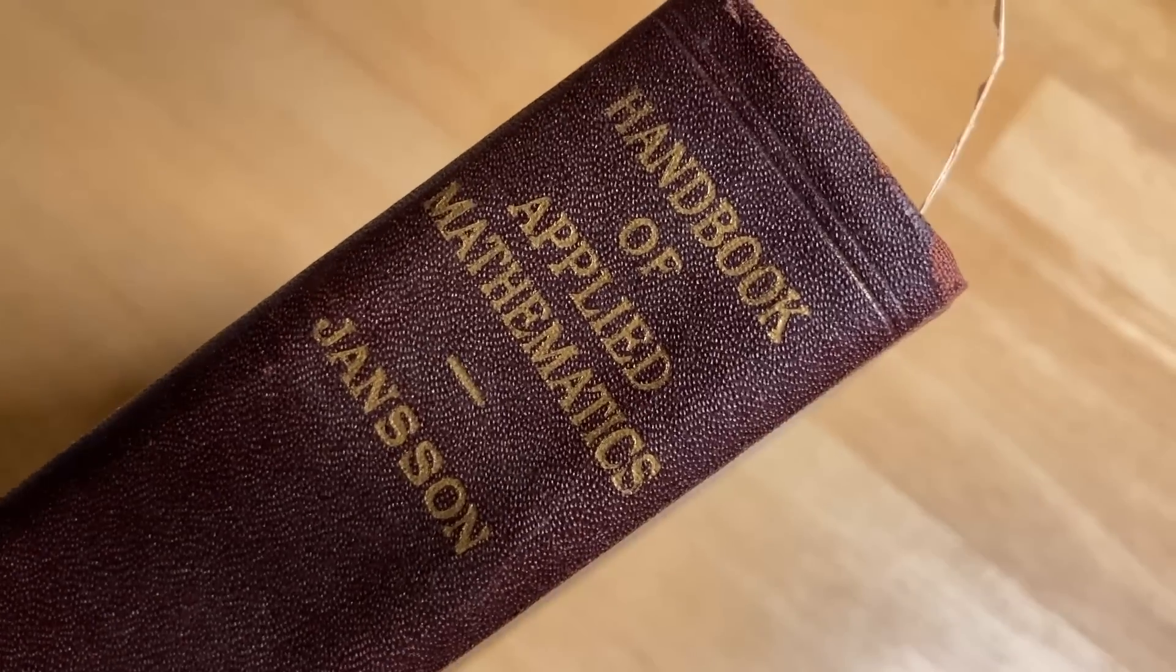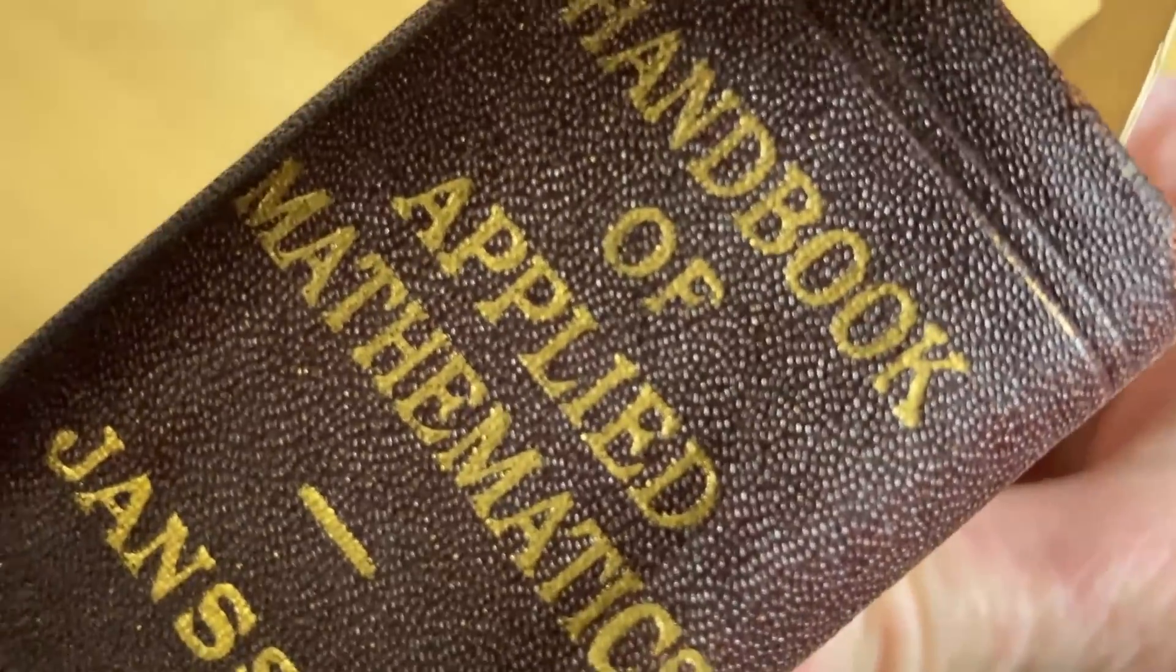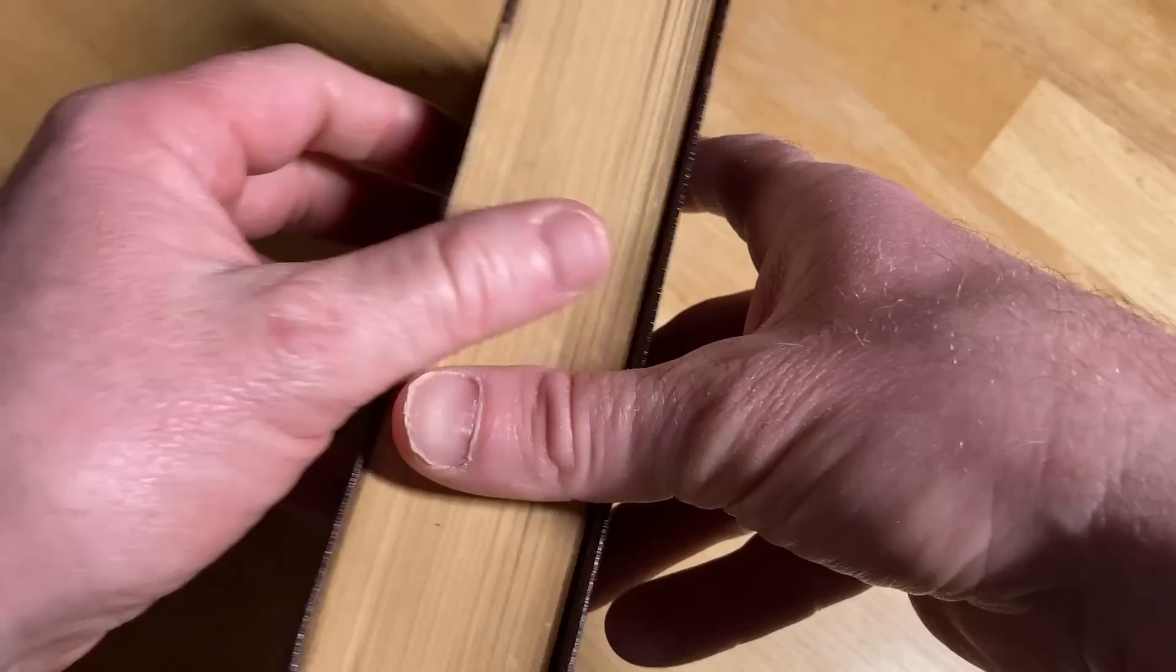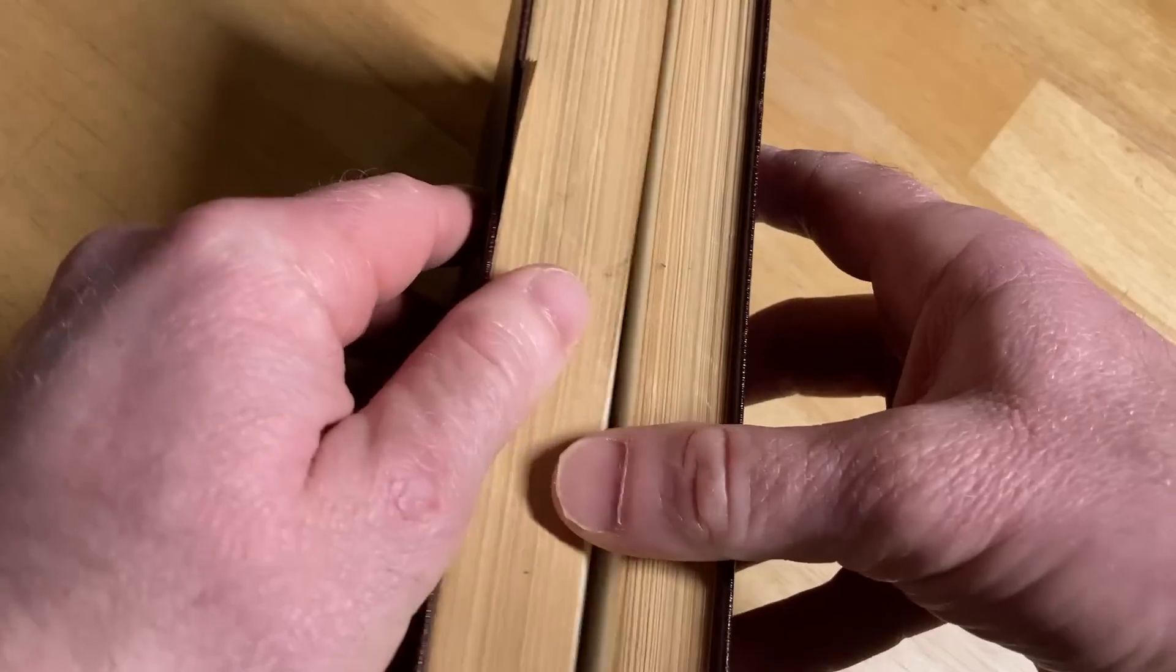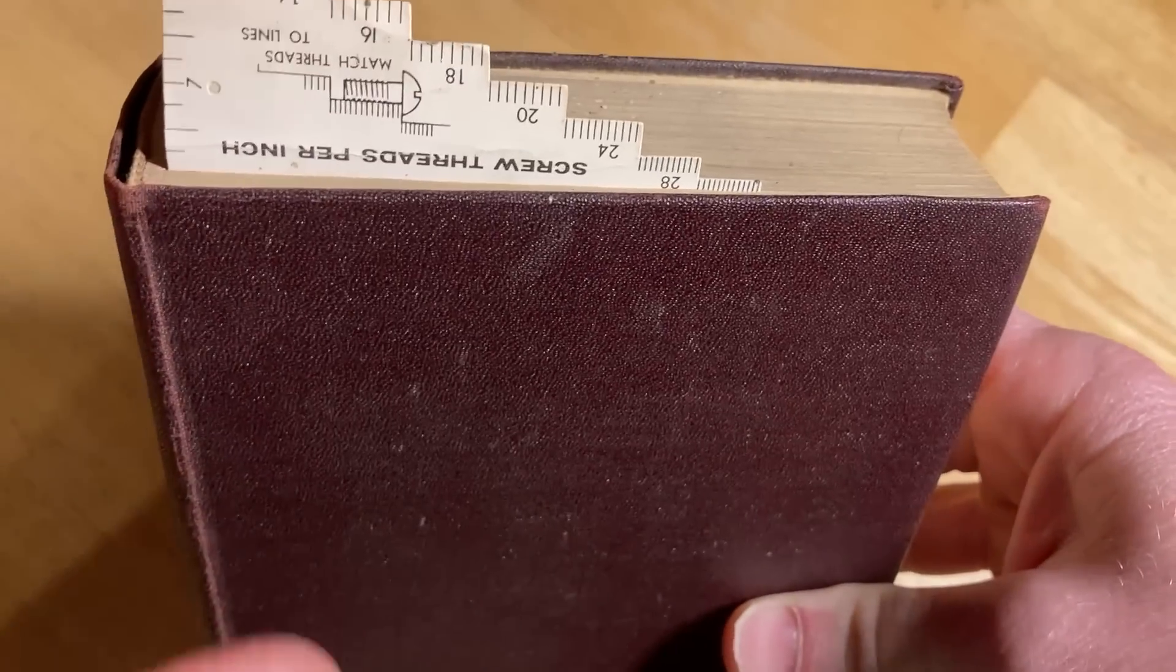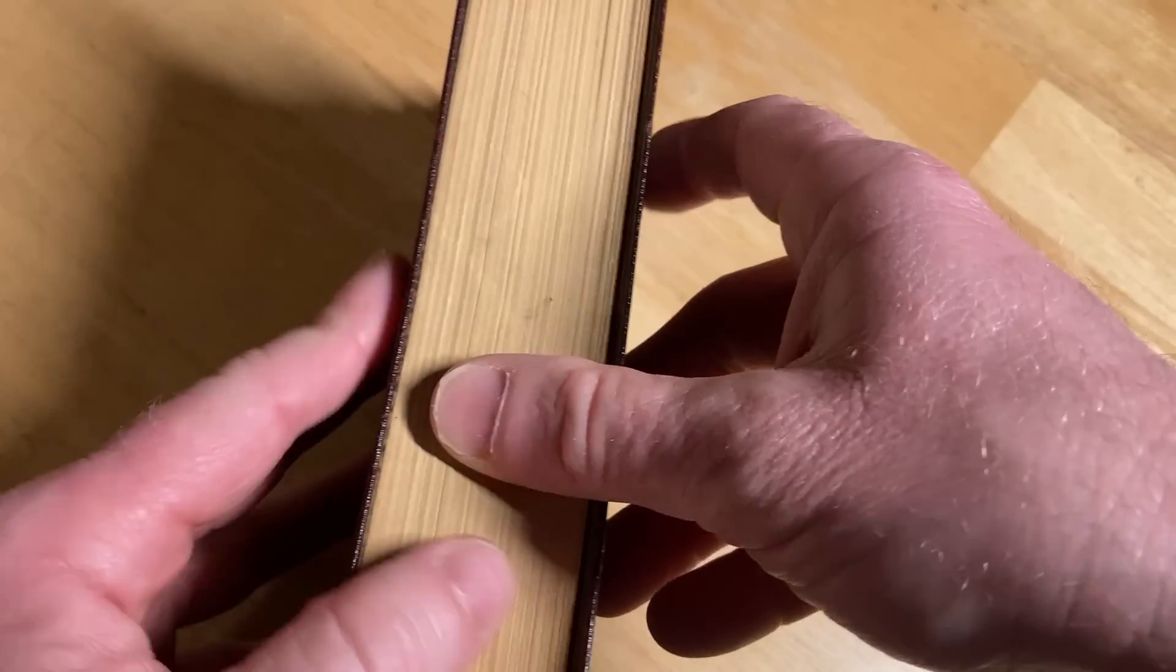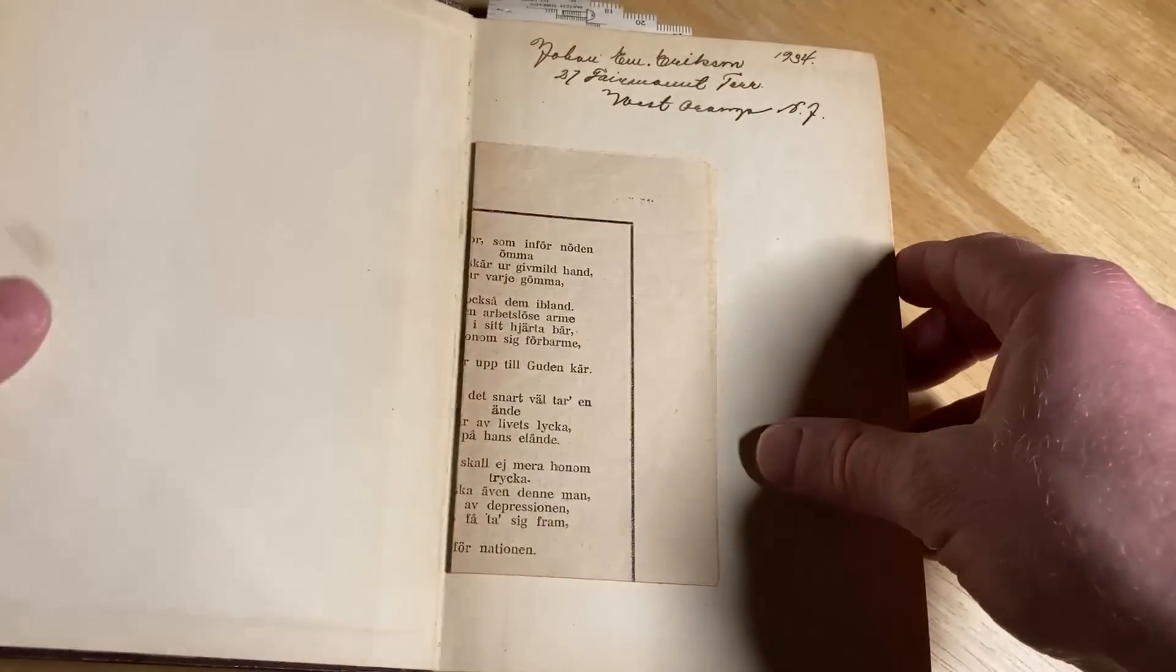This book contains tons of mathematics that you have never seen before in your life. It's called Handbook of Applied Mathematics by Janssen. And this book was a gift and I am super excited about it. But before we look at this book, I'm just going to smell it because it smells so good.